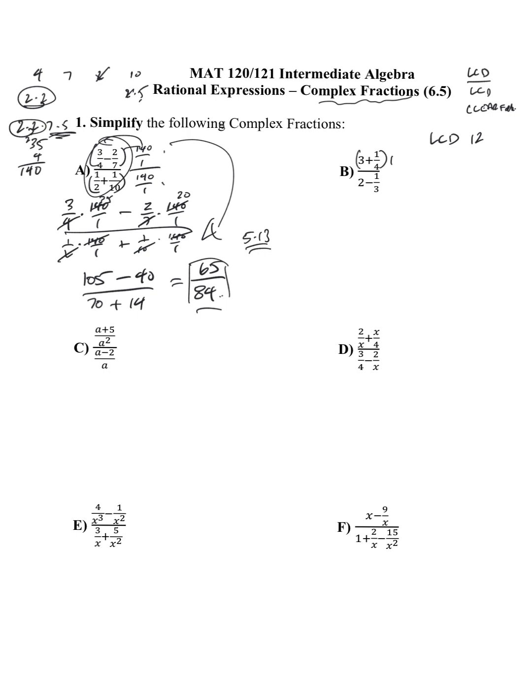So I'm going to multiply the top by 12. And I'm going to multiply the bottom by 12. There's my multiplication by 1. Distributing 3 times 12 is 36 plus 1 fourth of 12. Well, that's a 3. Distributing down here, 12 times 2 is 24 minus 1 third of 12 is a 4. So 36 plus 3 is 39. 24 minus 4 is 20.